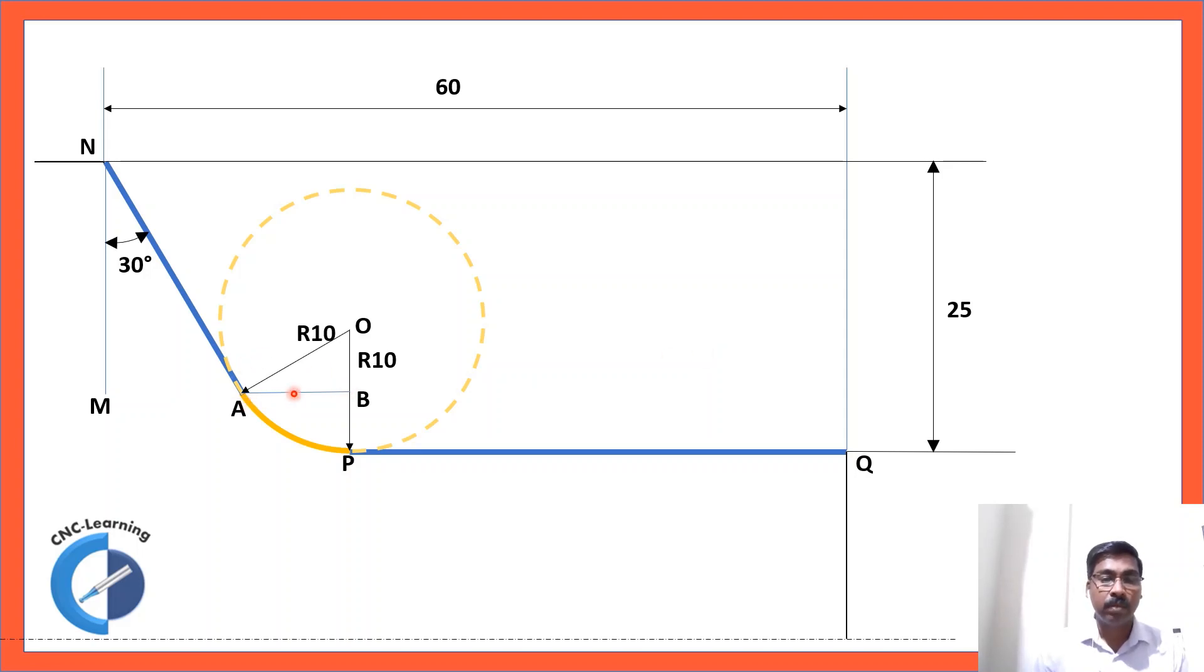Now, we are making a right angle triangle here just by adding this line AB. Now, we have another right angle triangle. Now, let us see. This 30 degree, if you draw another line which is parallel to this. So, you know, when two parallel lines are cut by an angular line. So, this angle and this angle will be same.